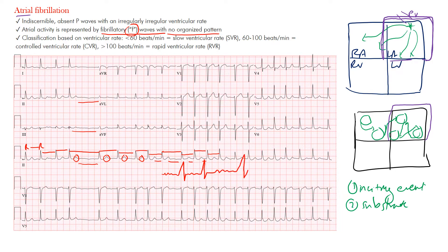Sometimes you can have small waves between the QRS complexes — little fibrillations. Depending on their amplitude: if those fibrillations are more than one millimeter in amplitude, we call that coarse atrial fibrillation. If they're less than one millimeter, we call it fine atrial fibrillation. And if the baseline is essentially flat, like we see here, we call this isoelectric.